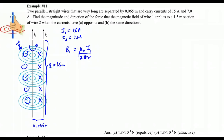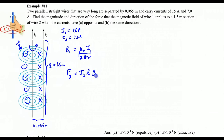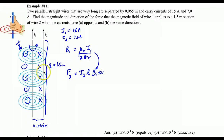The next question is: what is the force acting on the current-carrying wire 2 by being in wire 1's magnetic field? The force on wire 2 is given by: current of wire 2 times the length times the magnetic field B1. We also include the sine of the angle between the field going into the screen and the current going straight up — that's a 90-degree angle, so sine 90° equals 1.